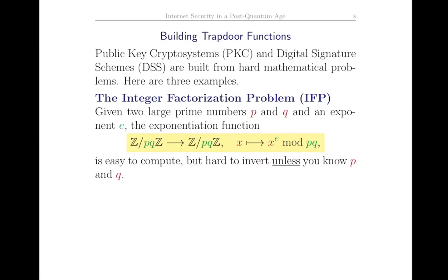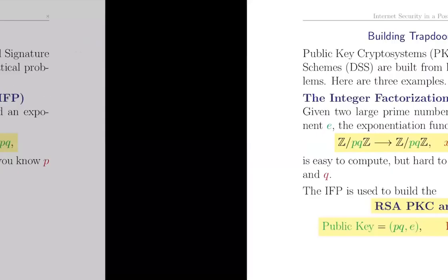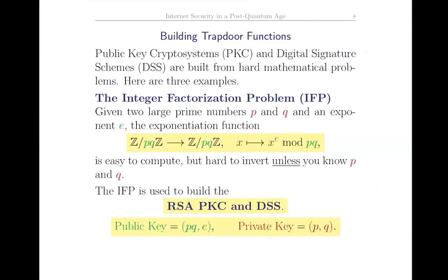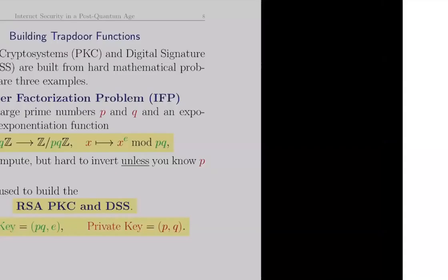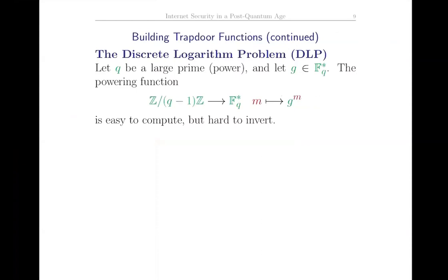Conjecturally, to invert you really do need to know P and Q. The integer factorization problem in this exponentiation form was used by Rivest, Shamir, and Adleman to create the RSA cryptosystem and also a digital signature scheme. The public key is the product PQ and the exponent; the private key is the individual primes. A second problem is the discrete log problem, which Diffie and Hellman used to create what's called a key exchange. Take a large prime, take a generator of large order in the multiplicative group of a finite field, and look at the powering function which takes m and raises g to the m-th power.